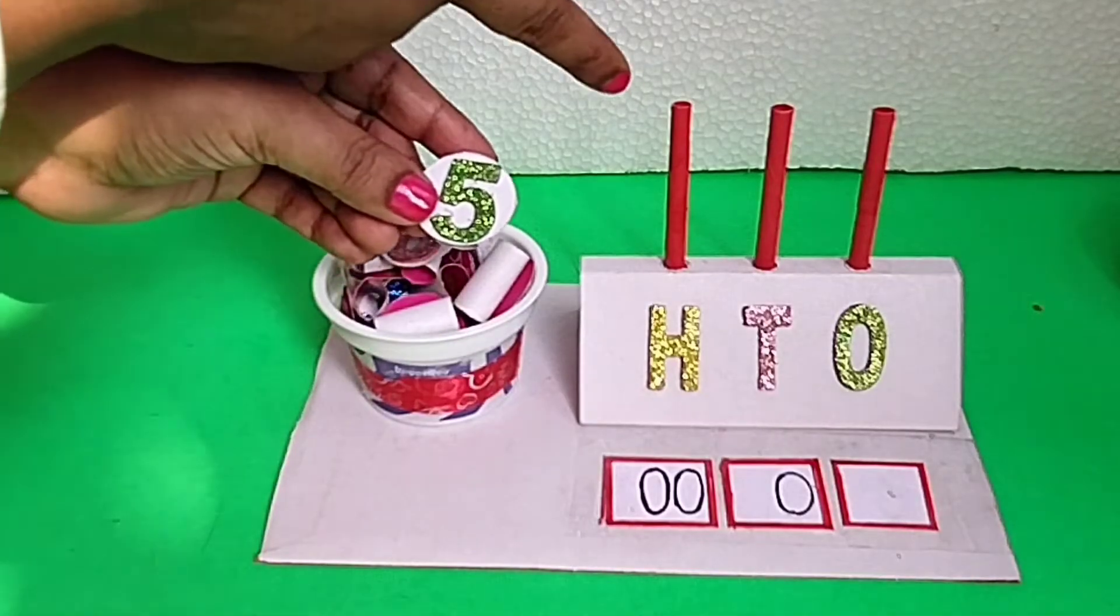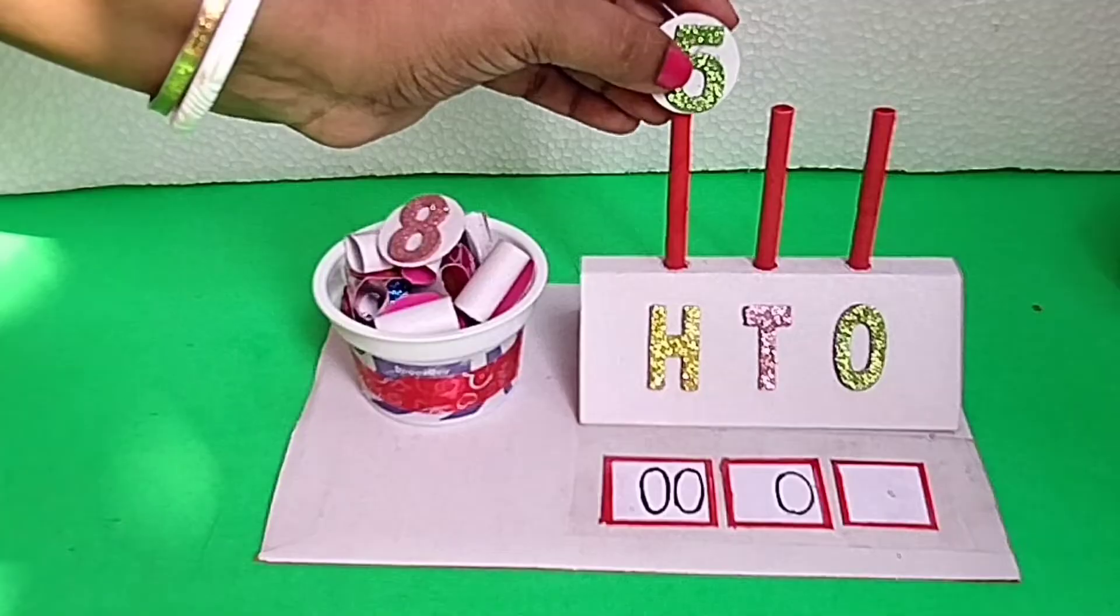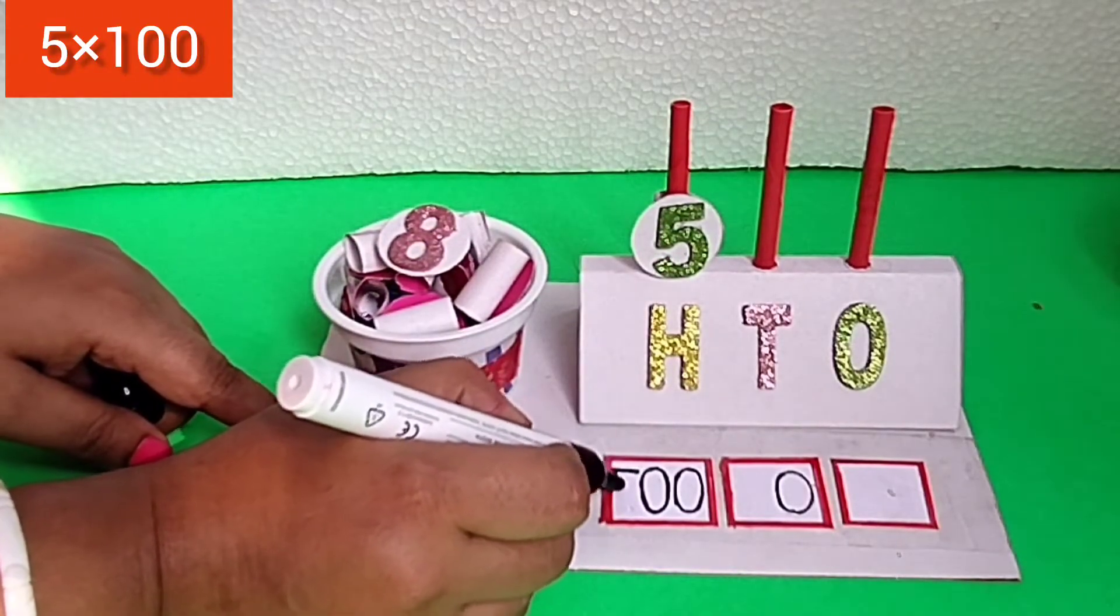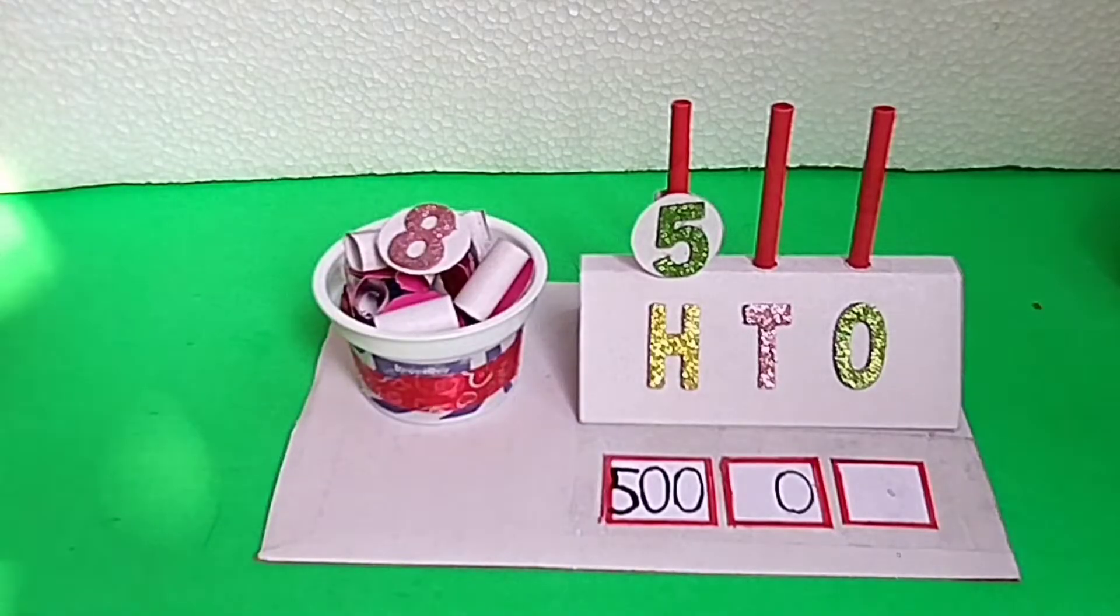But when we put this digit in the place of hundreds, it means there are 500. So, the place value of 5 is 500.